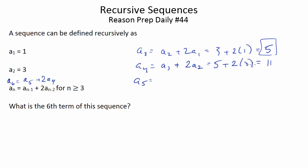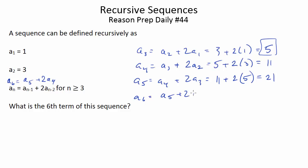So, the 5th term is going to be the 4th term plus 2 times the 3rd. As you can see, it's just following a pattern — nothing that crazy. So, it's 11 plus 2 times 5, which gives us 21. And then the 6th term is going to be the 5th term plus 2 times the 4th, so 21 plus 2 times 11. That's 22 plus 21, which is 43. And that's your answer.